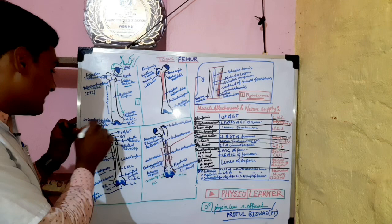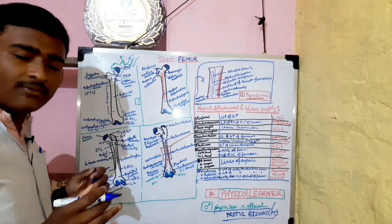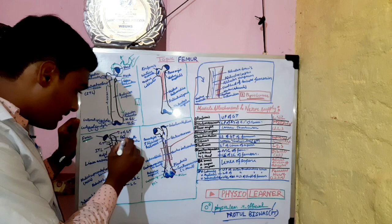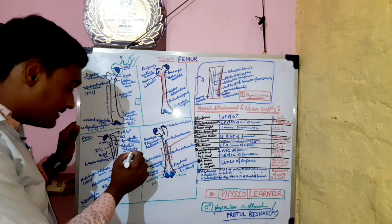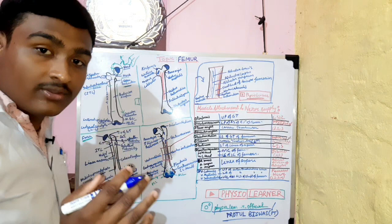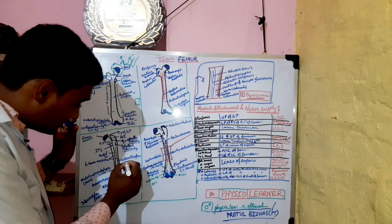You can see the lateral epicondyle and lateral condyle. In the posterior view of the femur, you can see the greater trochanter, the quadrate tubercle, and the gluteal tuberosity. In the posterior view of a right femur, you can identify the anterior surface and the lateral surface.